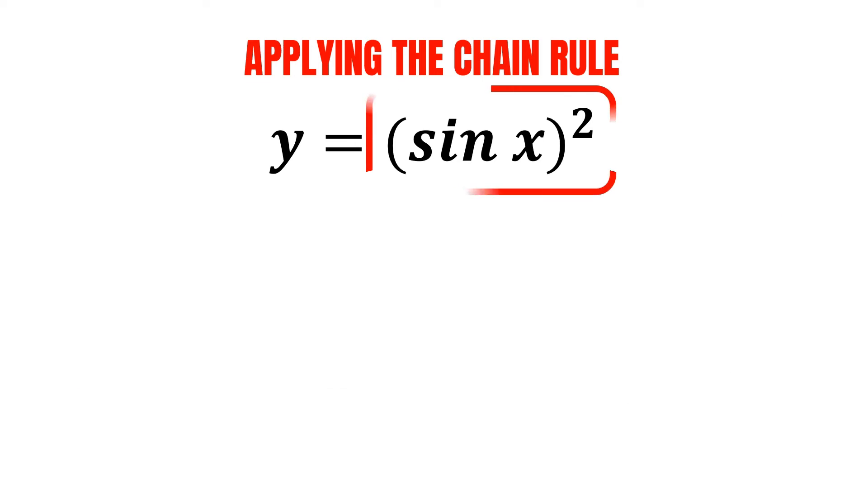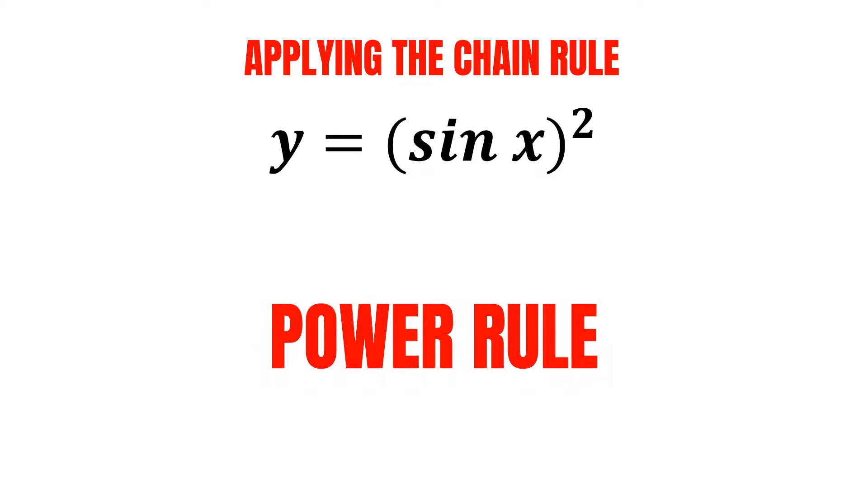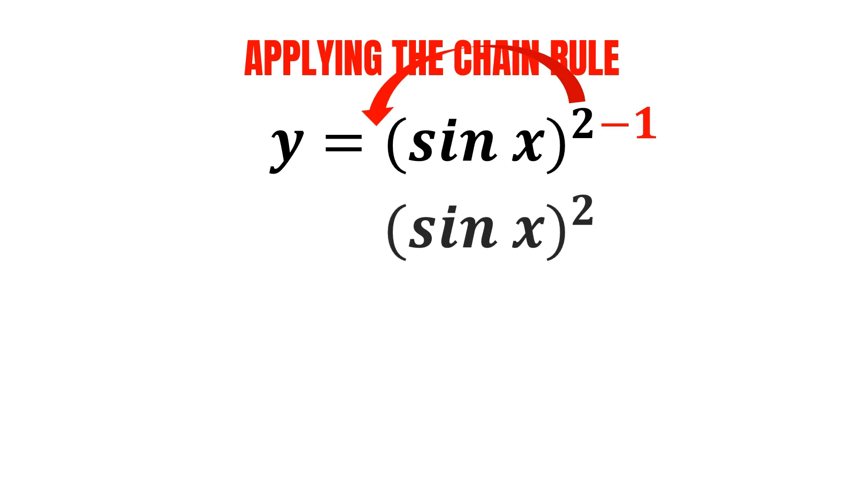First, we take the derivative of this whole term without changing the inner function. In this case, we simply apply the power rule, where we bring the exponent down and reduce the original exponent by 1, which is exactly what we normally do. So, we will be getting 2 multiplied by sine x, raised to the power of 1.